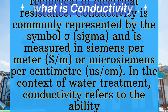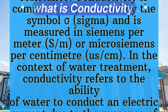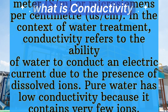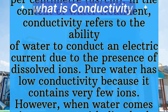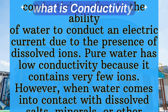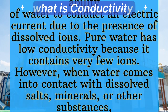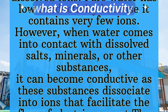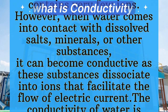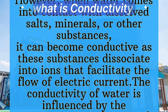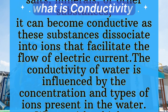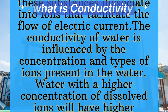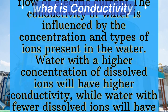In the context of water treatment, conductivity refers to the ability of water to conduct an electric current due to the presence of dissolved ions. Pure water has low conductivity because it contains very few ions. However, when water comes into contact with dissolved salts, minerals, or other substances, it can become conductive as these substances dissociate into ions that facilitate the flow of electric current. The conductivity of water is influenced by the concentration and types of ions present in the water.